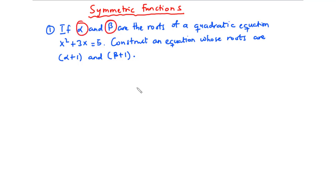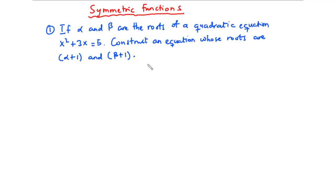We are asked to construct an equation whose roots are alpha plus 1 and beta plus 1. To solve the question, we are going to find the sum of roots and product of roots of this existing equation. Then using those values we can find the sum of roots and product of roots of the new equation, and form a quadratic equation with roots alpha plus 1 and beta plus 1. Let's do that together.